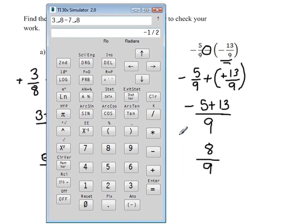For our other problem, negative 5 ninths. So we can use the negative sign, not the subtraction sign. Negative 5 ninths minus a negative 13 ninths is 8 ninths.